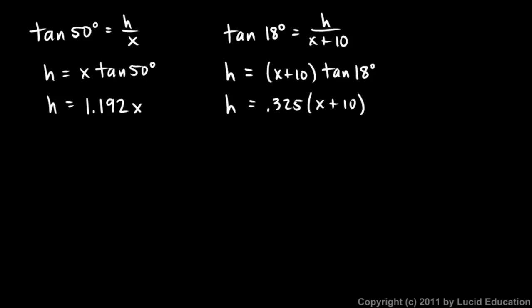From here it's just a little bit of algebra and it's not too bad. h is equal to this and h is equal to that, so logic compels me to conclude that this equals that. So let's write that: 1.192x equals 0.325 times x plus 10. We can solve this for x, so let's distribute over here on the right.